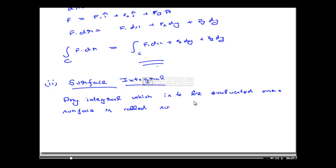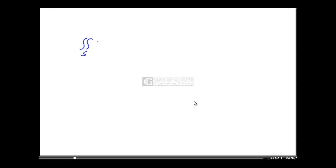Surface Integral. The formula for calculating this is the surface integral of F·n·ds. Another way of writing a surface integral is with a scalar function f and ds, or in terms of a cross product, F cross ds.